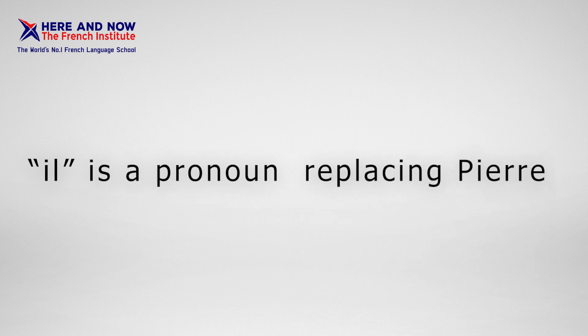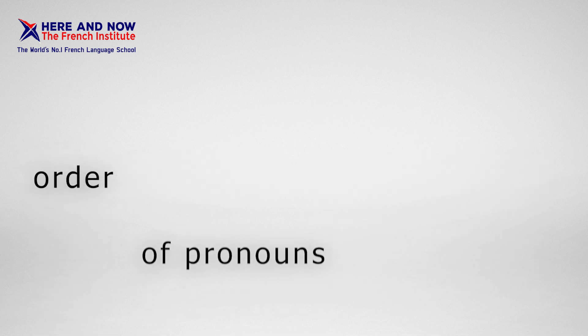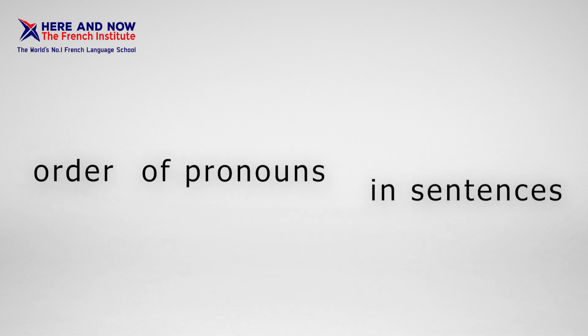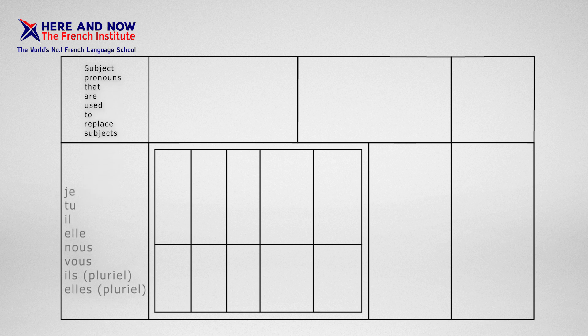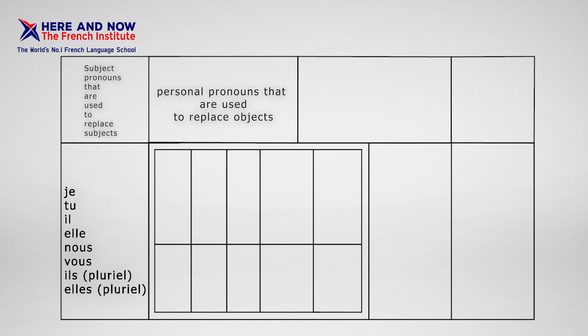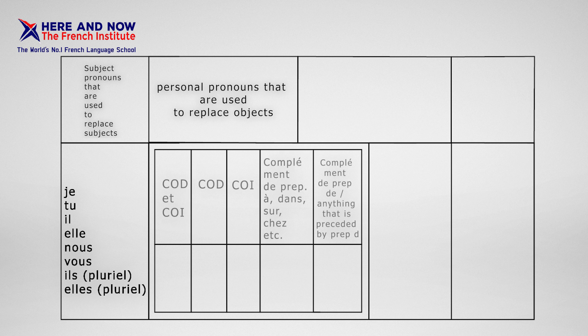Now let's see the order of pronouns in sentences. First, subject pronouns are used to replace subjects — like 'je', 'tu', 'il', 'elle', 'nous', 'vous', 'ils', 'elles' (pluriel). These are followed by personal pronouns used to replace objects.